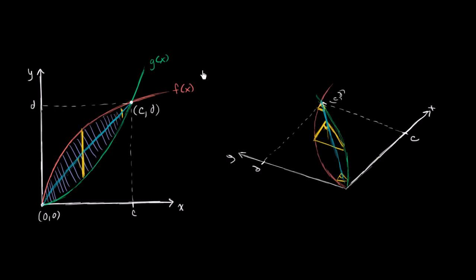This cross-section is going to look like this if you were to flatten it out. It's popping out of your page or screen, but if you were to actually flatten it out, the cross-section would look like this. It's going to be an isosceles right triangle where the hypotenuse sits along the base. This distance between that point and this point is the same as the distance between f of x and g of x for this x value, and obviously that changes as we change our x value.